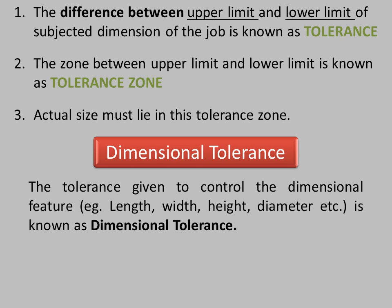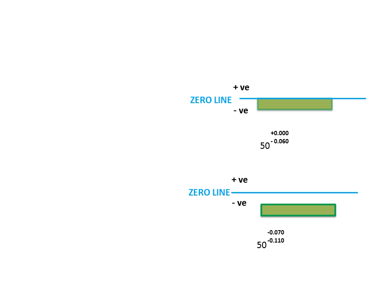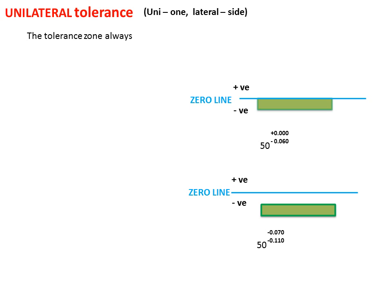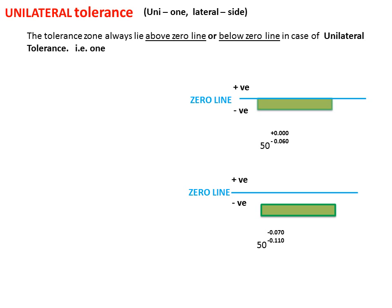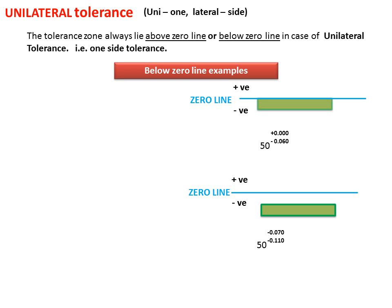Dimensional features may be Length, Width, Height, Diameter, etc. Unilateral Tolerance means One-Side Tolerance. The Tolerance Zone always lies either above the zero line or below the zero line in case of unilateral tolerance — that is, One-Side Tolerance.